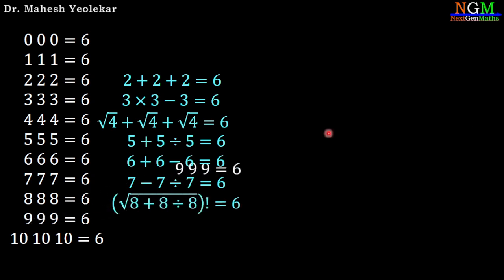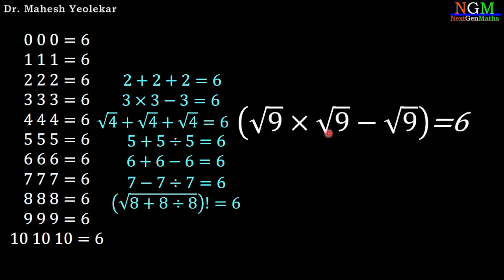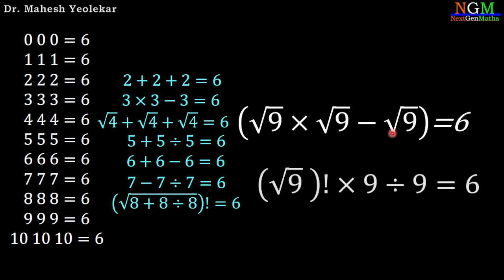Next equation: 9, 9, 9 equals 6. Apply square root, multiplication, and subtraction: square root of 9 times square root of 9 minus square root of 9, giving 3 times 3 equals 9, minus 3 equals 6. Or square root of 9 factorial, meaning 3 factorial is 6, times 9 divided by 9 equals 1, so 6 times 1 equals 6.